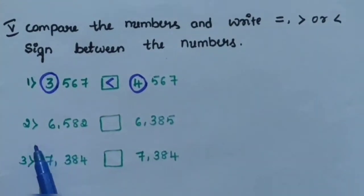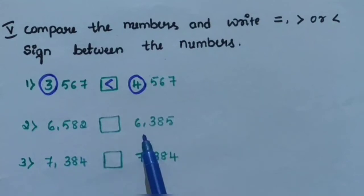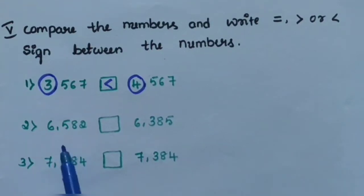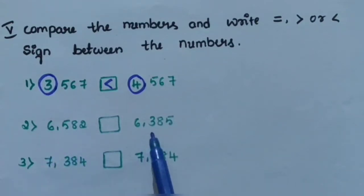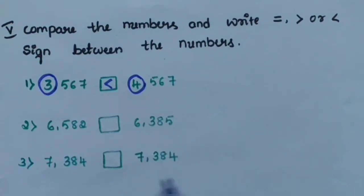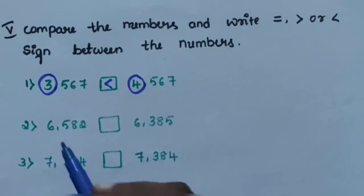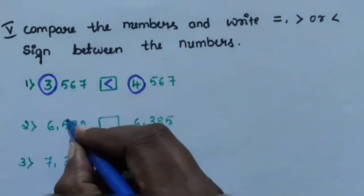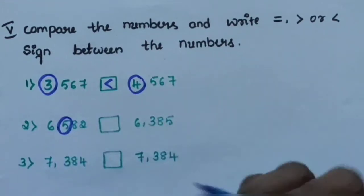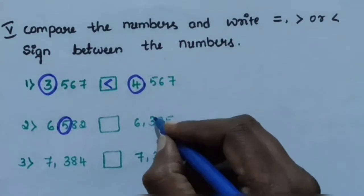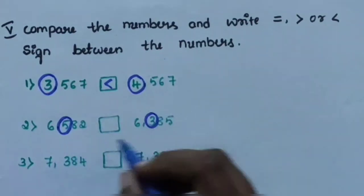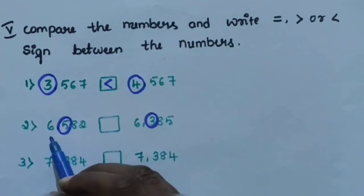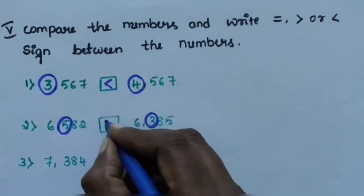Question number 2: 6582 and 6385. These two numbers are 4-digit numbers. The 1000s place values are equal, so compare the 100s place value. 6582 has 5 in the 100s place and 6385 has 3. Comparing 5 and 3, 5 is the greatest, so 6582 is the greatest number.